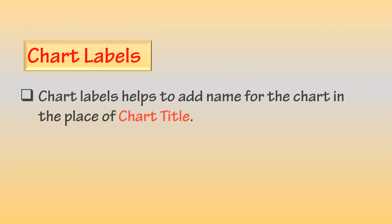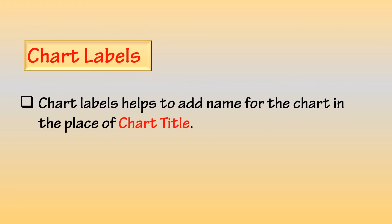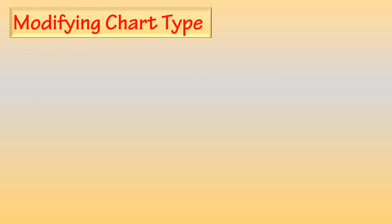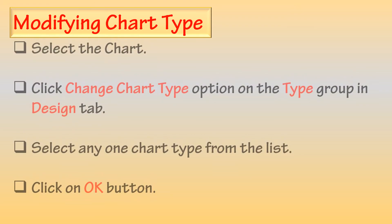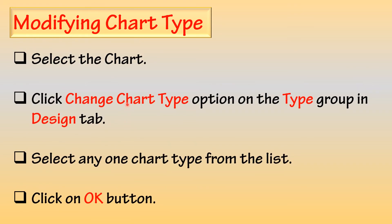Chart Labels: Chart labels help to add a name for the chart in place of the chart title. Modifying Chart Type: To modify the chart type, first select the chart. Click the Change Chart Type option on the Type group in the Design tab. Select any one chart type from the list, then click the OK button.